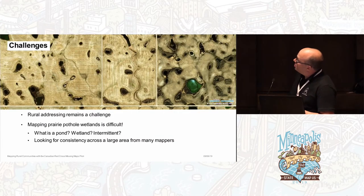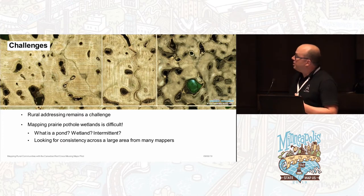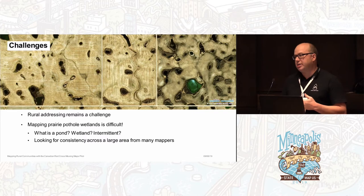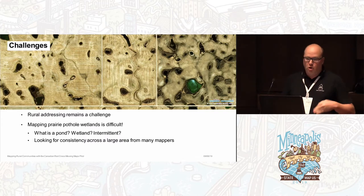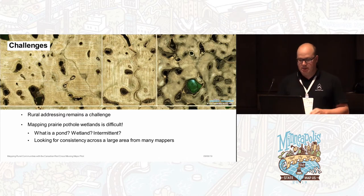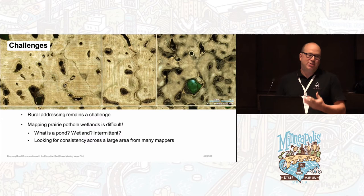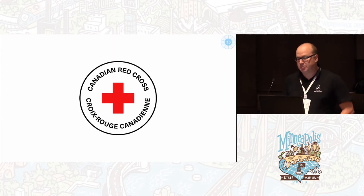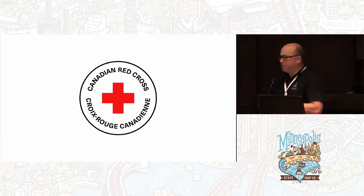Here's what some of those ponds looked like. Mapping them was a bit of a challenge in terms of deciding which ones to map. Since we had a lot of different mappers, the validator role was to make sure the data came out consistent. Addressing is also a challenge — if the houses had street addresses, it would make things a lot easier, but they don't. I really look forward to having more collaboration between the Canadian Red Cross and OpenStreetMap in the future.